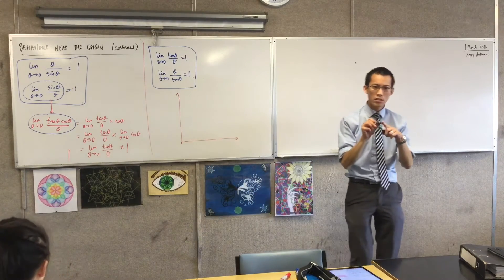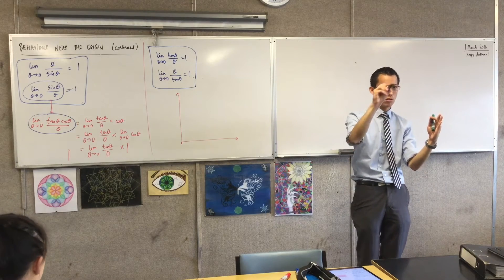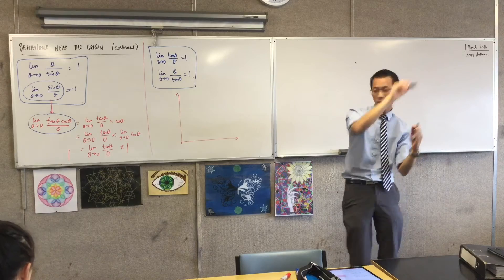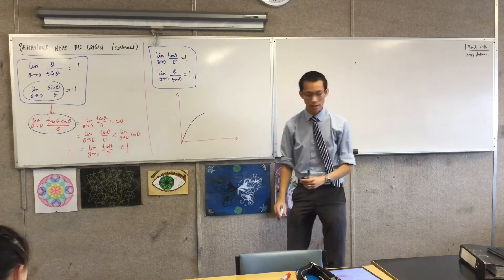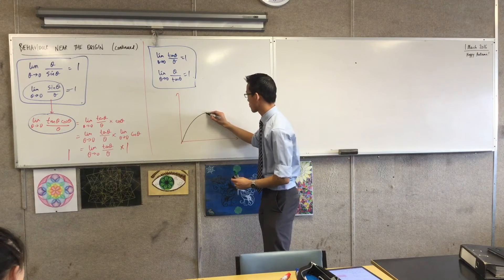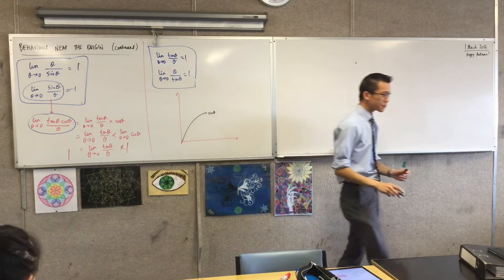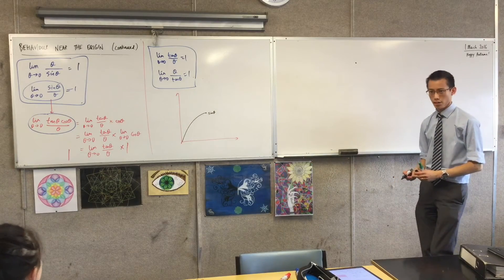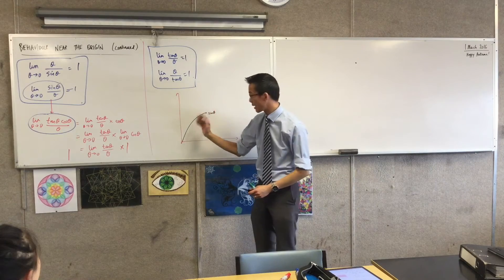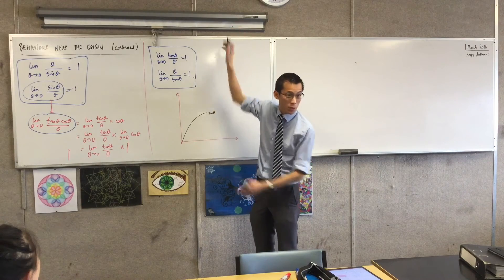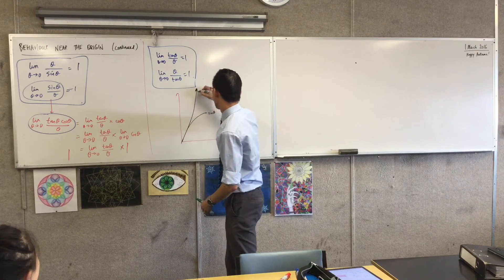So how far does sine theta go? It starts at the origin. What does it get to by the time it gets to theta? It gets up to 1 and then it stops there. So I'm just going to draw that little part of sine theta. Now what does tan theta look like? It's got this asymptote at pi over 2. It can't get there. It gets steeper and steeper. So if I put it on the same graph it's going to look something like that.